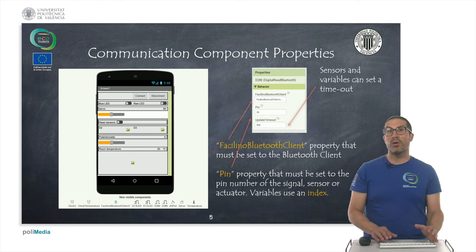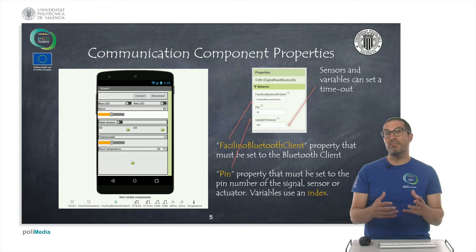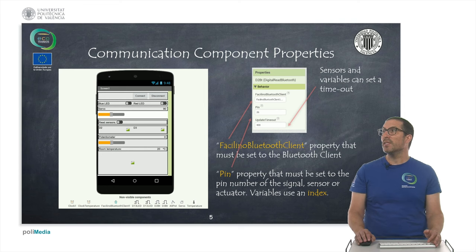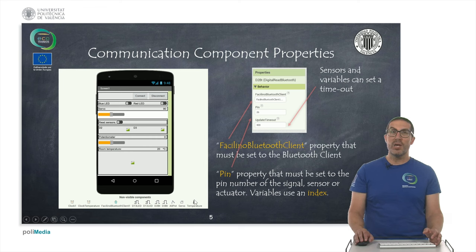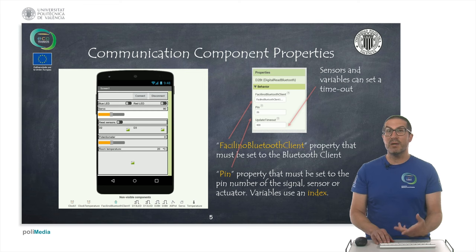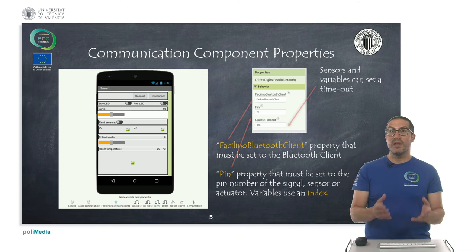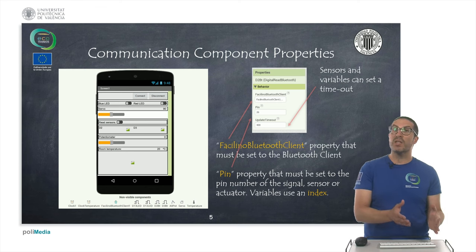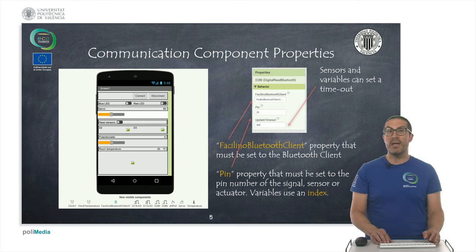Every communication component has basically the same properties. One of them is the Facilino Bluetooth client — every application needs one Facilino Bluetooth client, and then we can add as many components as we want to interact with signals, actuators, and sensors. All these components need to point to the correct Facilino Bluetooth client. In general, all components have a pin, which is the signal pin indicating where the servo or temperature sensor is connected — information the electronics need to provide the correct readings.